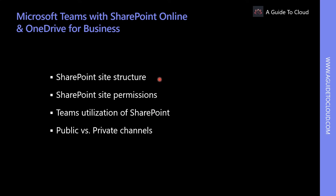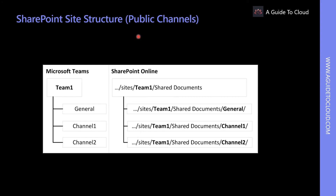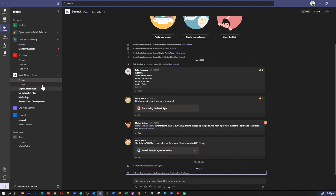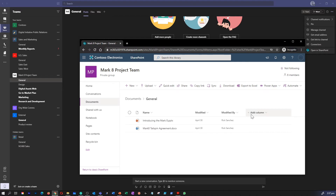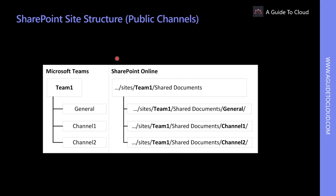Let's understand a bit more details about SharePoint site structure, how the site permissions work, and how you can measure the Teams utilization for SharePoint, and understand the difference between public and private channels. Any tenant has two unique namespaces. When a new Microsoft 365 group or team is created, a new SharePoint site is provisioned. You can go under your Teams, click on the ellipsis, and click on Open the SharePoint to view the SharePoint site. When a new channel is created, a folder in shared documents is automatically provisioned. The following diagram shows an example of how Teams and public channels rely on SharePoint site collections and document libraries.